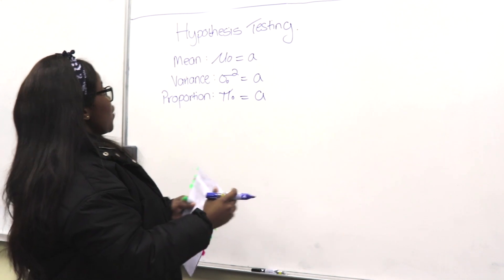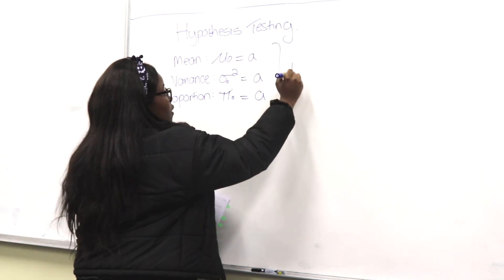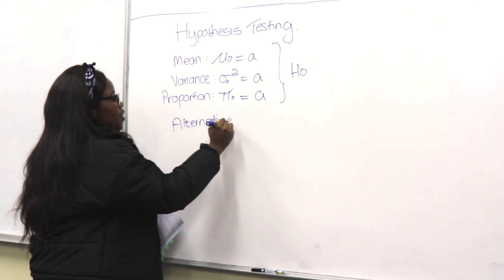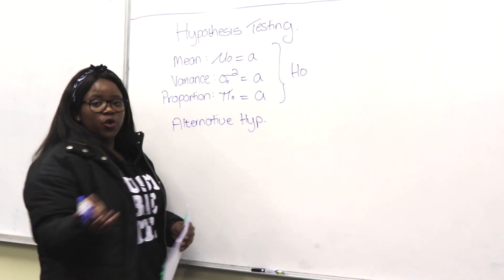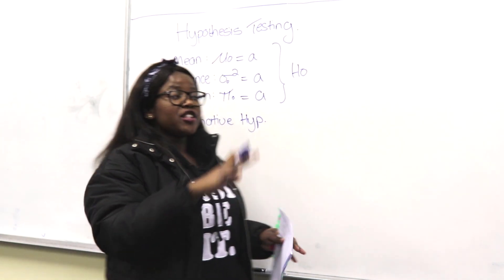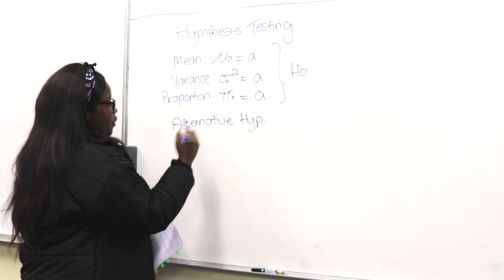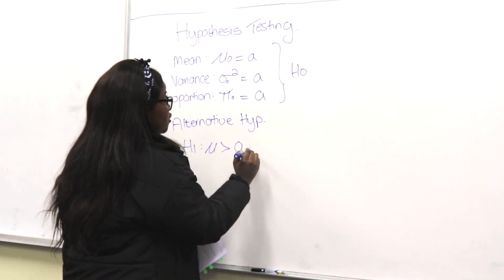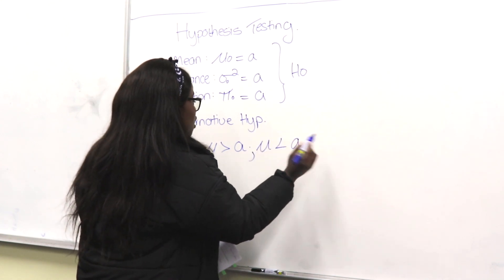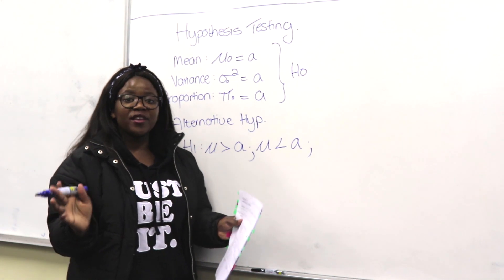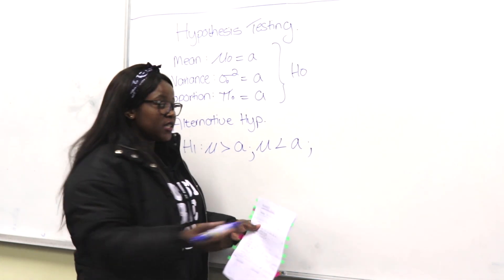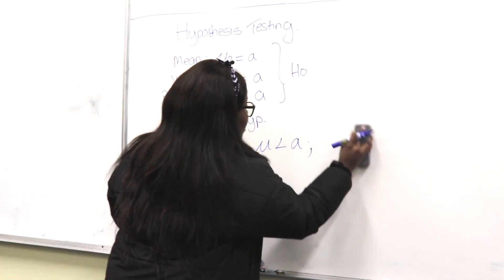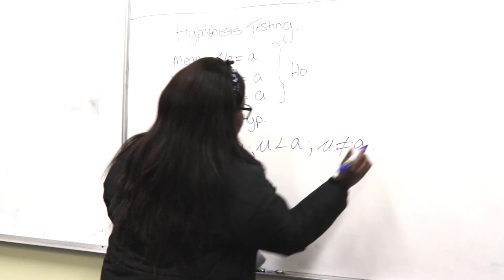For the null hypothesis, it's always going to be equal to something. The problem comes with the alternative hypothesis — it really depends on your question. They will give you hints: if it's greater than, less than, or if something is significantly different, that's when you know your test is going to be two-tailed, meaning not equal to a certain number.